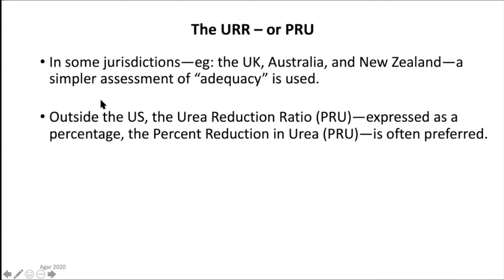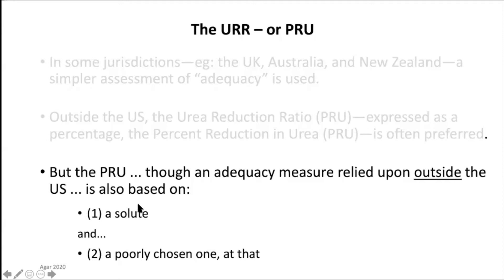In some jurisdictions — for example the United Kingdom, Australia, New Zealand — we use a simpler measure of adequacy. Outside the US, not many people use KtV except for research purposes. We use a thing called the urea reduction ratio, or URR — if expressed as a percentage, it's called the PRU. But again, it's a formula which is a spillover from the days when we thought urea mattered most. The PRU, though relied upon outside the US, is based on a solute — and a poorly chosen one at that. So even we use an index which is relatively useless.